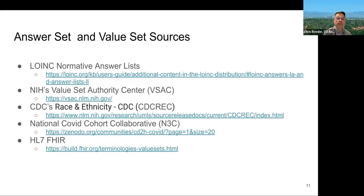There are a number of different sources for answer set and value sets. LOINC includes answer lists, called normative answer lists. They have their own ID separate from the concepts. It's very neat and tidy. The NIH maintains the value set authority center, which is typically value sets rather than answer lists. The CDC has at least one well-known answer set for race and ethnicity.